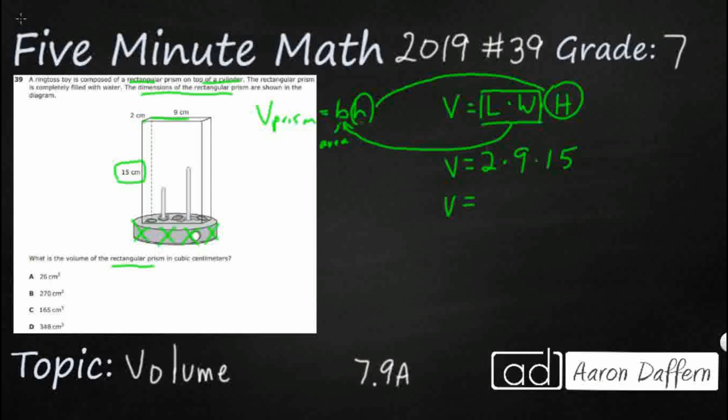We could do 2 times 9, we can get 18 times 15. Or you know what I'd rather do? Check this out. I'd rather regroup these, use the commutative property. I want to multiply those two first: 2 times 15, so that's 30.